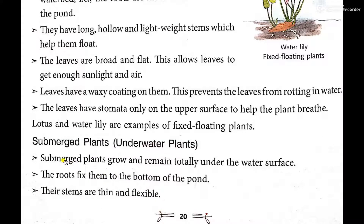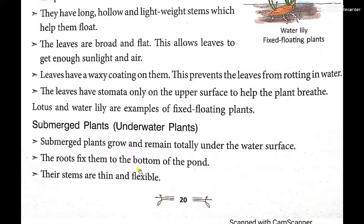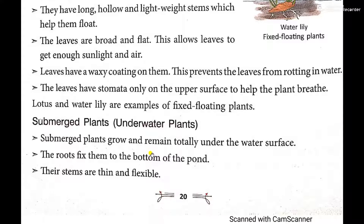The next category is submerged plants. 'Submerged' means merged in the water. They are also known as underwater plants — they completely grow under the water. Submerged plants grow and remain totally under the water surface; you cannot see them from the surface. They grow in lakes, ponds, or on the seabed.